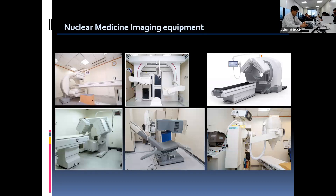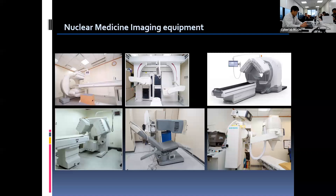Let me first introduce our imaging equipment we currently use in our department. Various machines have been developed by different manufacturers for special purposes in nuclear medicine imaging. The top left two images are gamma cameras, and the image on the right is a SPECT system. In the bottom left picture is a triple head gamma camera for brain SPECT. Next, in the middle, a cardiac SPECT machine that uses a CZT-based solid state detector. Lastly, a thyroid scanner using the pinhole collimator.